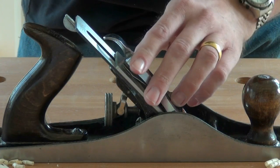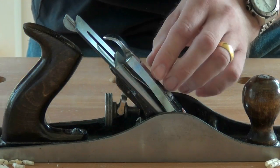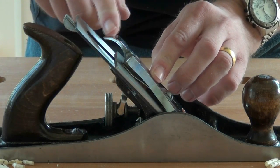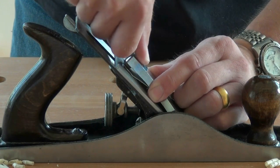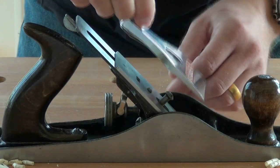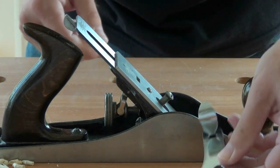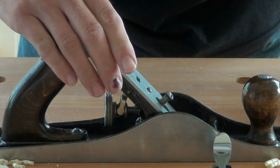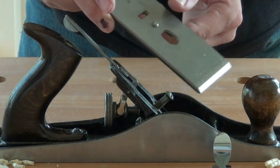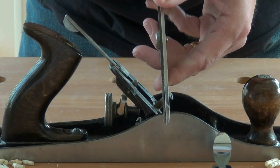The blade assembly can be removed from the plane by releasing the lever at the top of the lever cap or cap iron which comes out like so, and then the chip breaker attached to the blade.